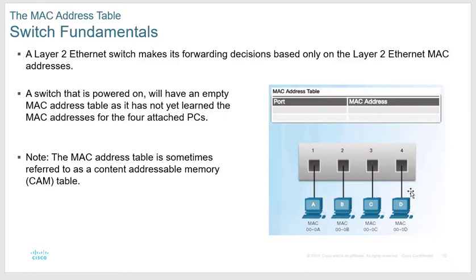A hub, by contrast, floods everything — whatever comes in one port goes out all other ports. That's why hubs are bad: they generate so much unnecessary traffic that with CSMA/CD the line is almost never clear, causing collisions. If you have any hubs in your network they should be removed. The switch only looks at the destination MAC address and only records source MAC addresses in the CAM.